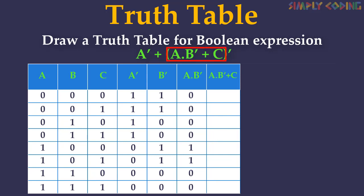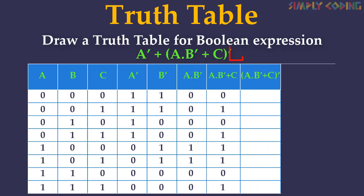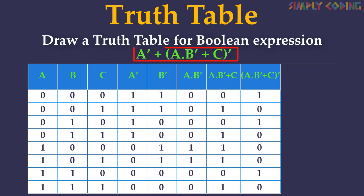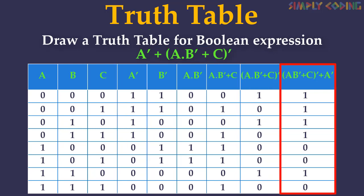We take the A column and B-bar column — only in two places are both inputs one, so the output will be one there and zero elsewhere. Next we solve AB̄ + C using OR, so the output is one if any input is one. We take the C column and AB̄ column and identify the ones. Then we find the NOT of this expression, reversing zeros and ones. We then OR this with ā; since we already calculated ā, we take that column and apply OR. Wherever any input is one, the output is one. This is the answer for this expression.